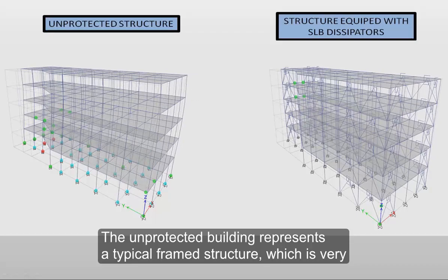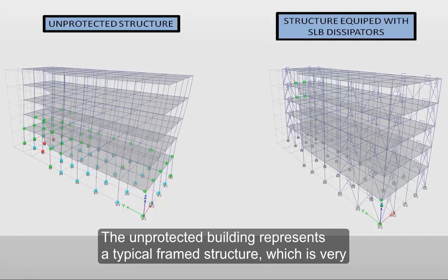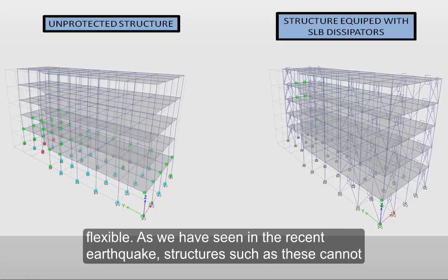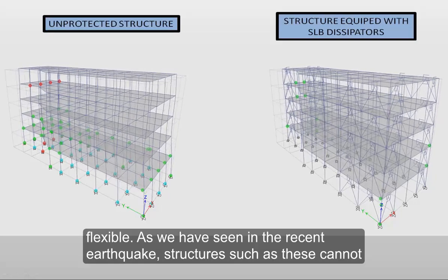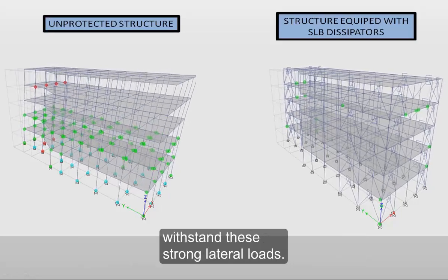The unprotected building represents a typical framed structure, which is very flexible. As we have seen in the recent earthquake, structures such as these cannot withstand these strong lateral loads.